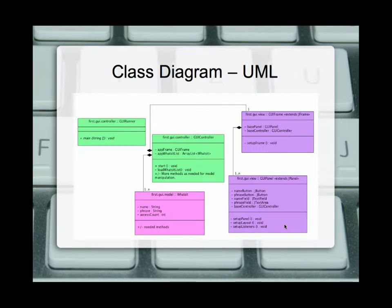We have three helper methods listed here: setup panel, setup layout, and setup listeners, which we'll go into more detail on in just a moment. Finally, in pink we have our model package. In this case we're using a whatsit — just a placeholder class to show the relationship and the passing of both values and references to objects, and any needed methods will belong there as well.